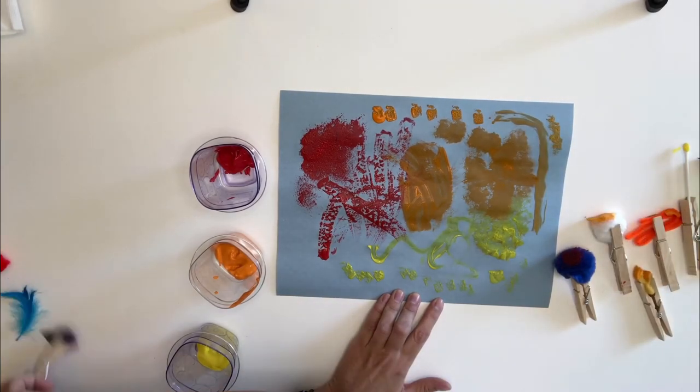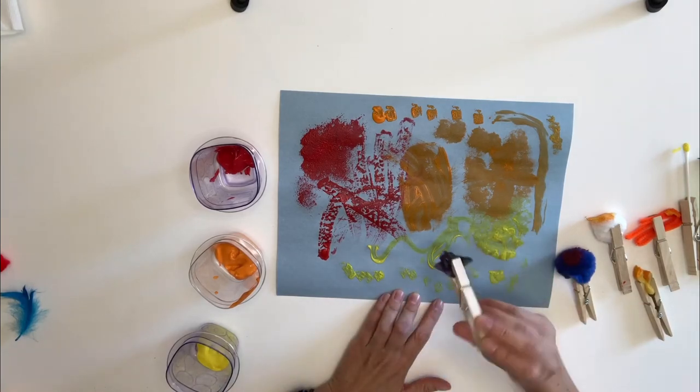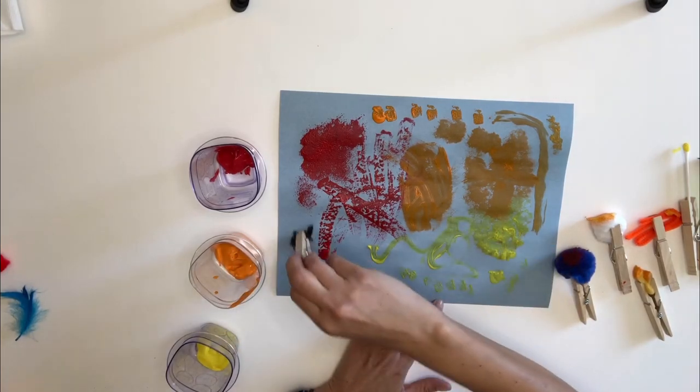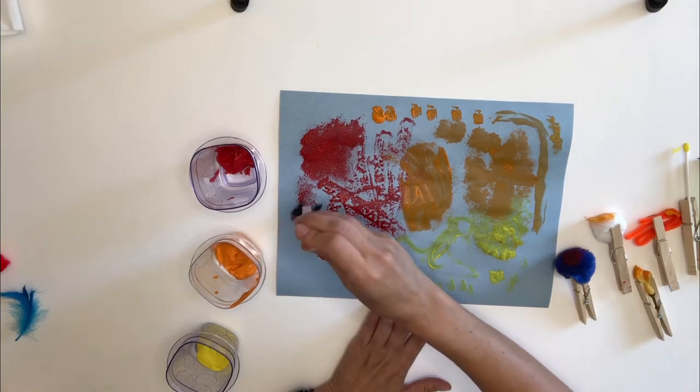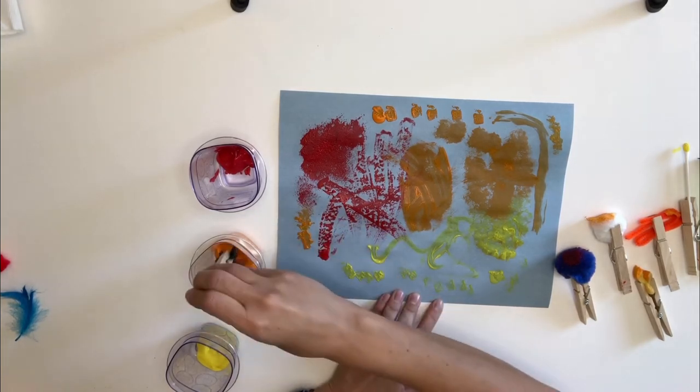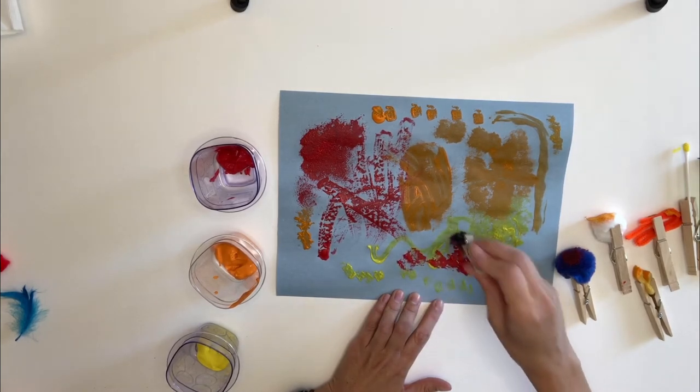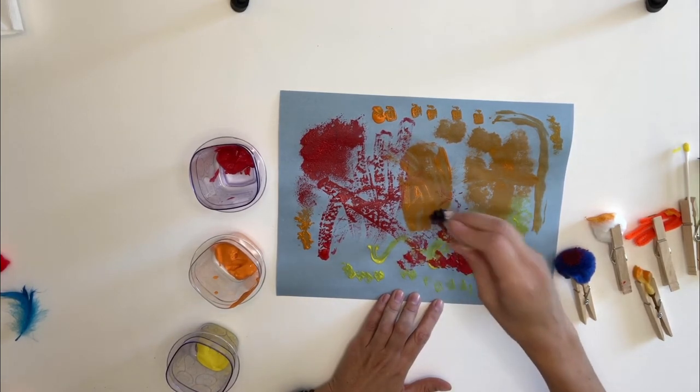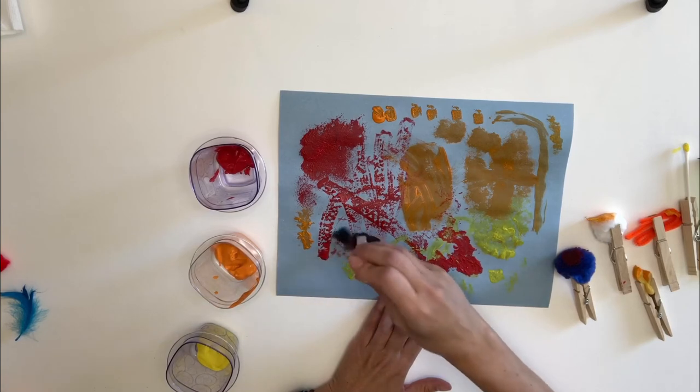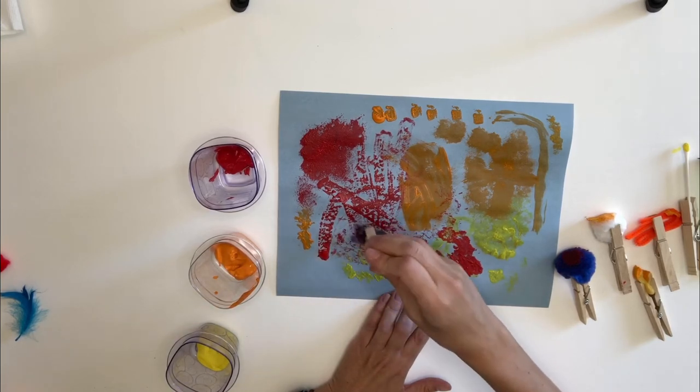And then finally, I'm gonna try out this tissue paper. Oh, that one makes a lot of noise. It's kind of fun. Wow. This one looks so cool. Because it makes a really neat, crinkly pattern on my paper. Oh, I like that one a lot.